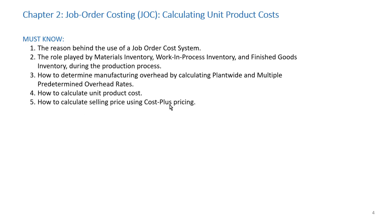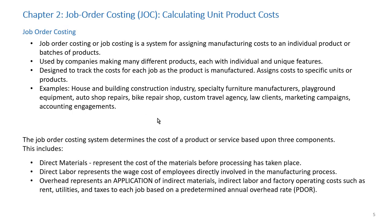Job order costing is a system for assigning manufacturing costs to an individual product or batches of products. It's used by companies making many different products, each with individual and unique features. It's designed to track the cost of each job as the product is manufactured. Examples of manufacturing companies which would use job order costing include housing and building construction firms, specialty furniture manufacturers, and bike repair shops.